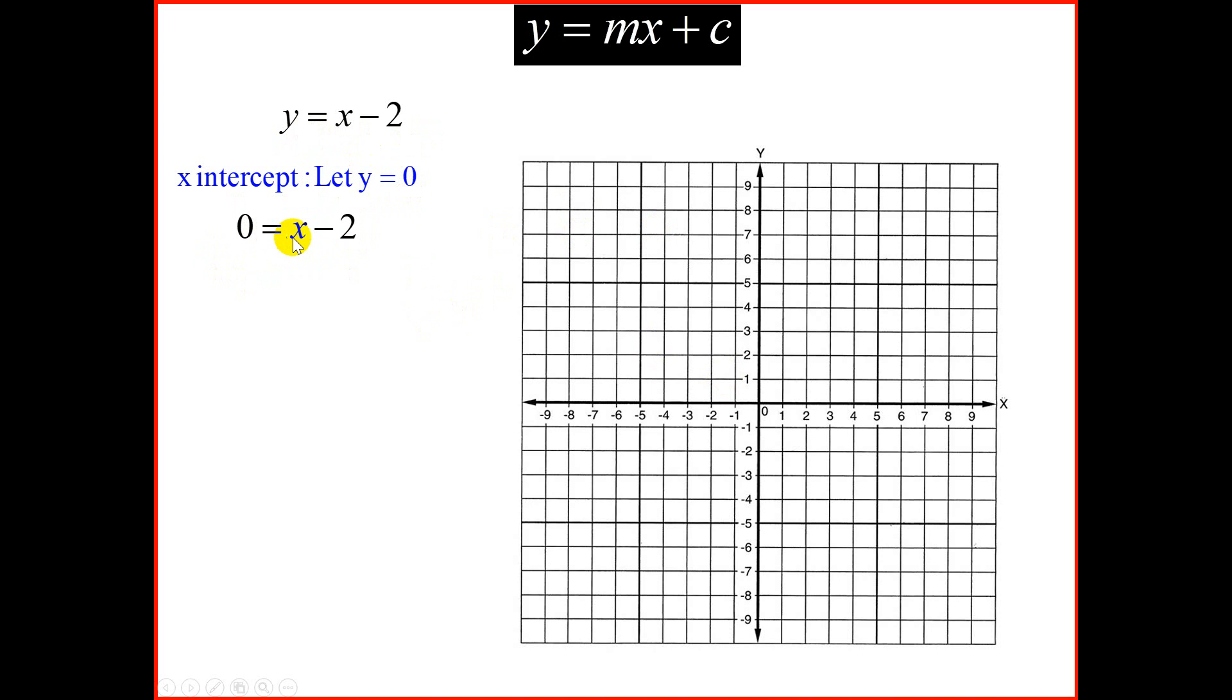And that gives us 0 is equal to x minus 2. Move your minus 2 on the other side. We have x is equal to 2. Now, 2 is the point where the graph will cut the x-axis. Therefore, we call it the x-intercept, and we place a dot on 2.